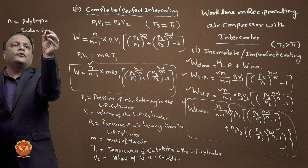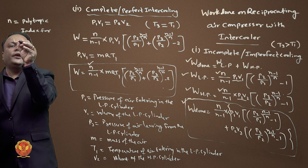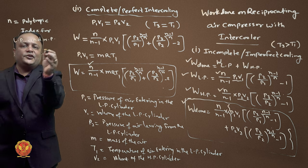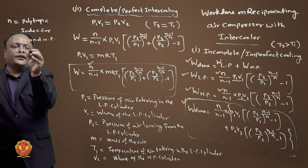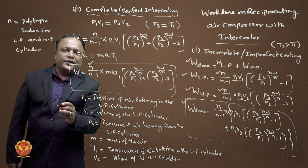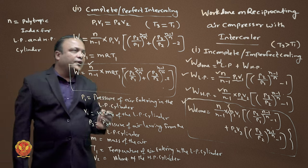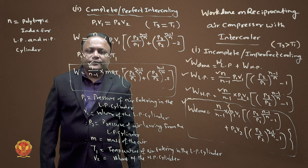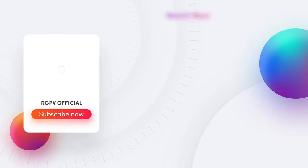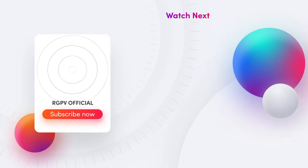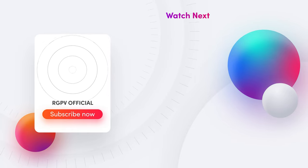The pressure ratios are defined for LP and HP cylinders respectively. Today we studied the work done for a reciprocating compressor using both perfect intercooling and imperfect intercooling.